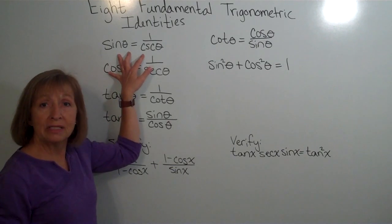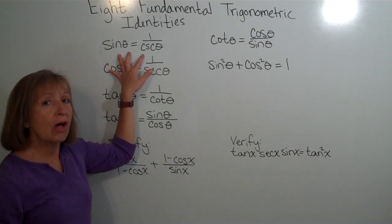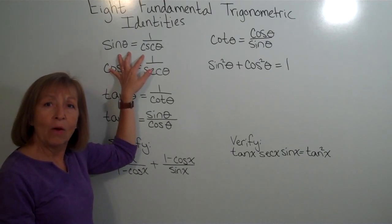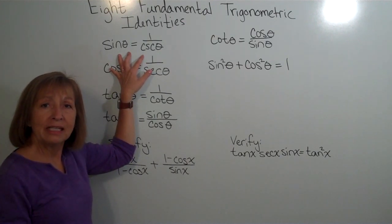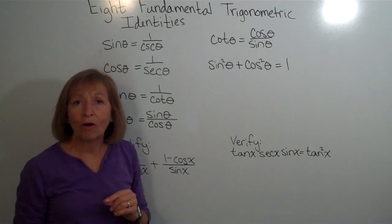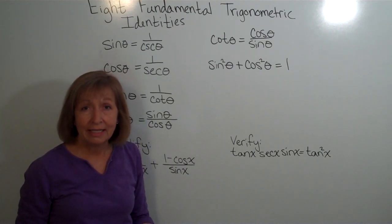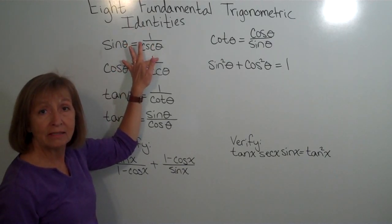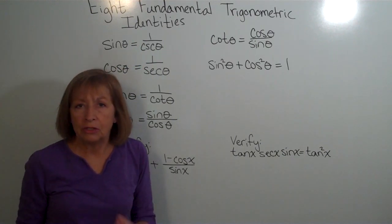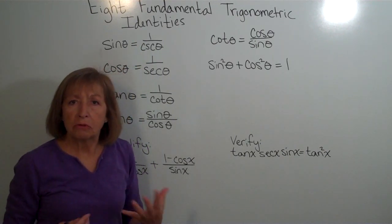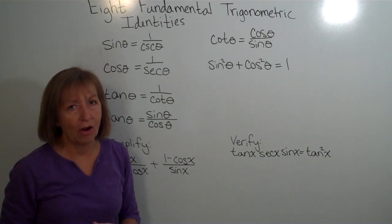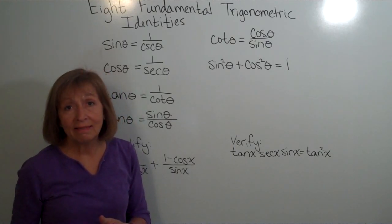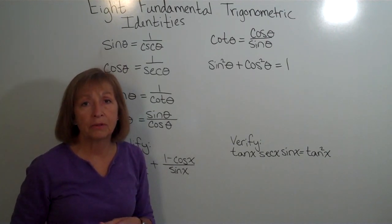The first set are the reciprocal trig identities. Even back to the basic definition, the sine of an angle is defined to be y over r, and the cosecant of the angle was defined to be r over y, so they were reciprocals of each other. The sine of theta is equal to the reciprocal of cosecant theta — it's not new news, just written differently and now called an identity. So sine theta equals 1 over cosecant theta, and cosecant theta equals 1 over sine theta.